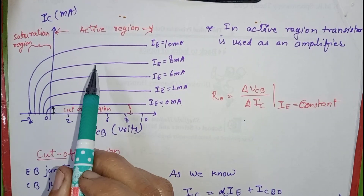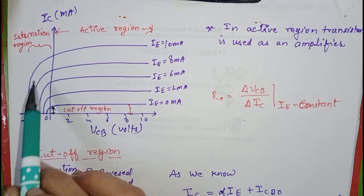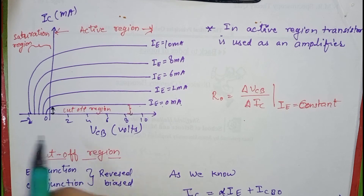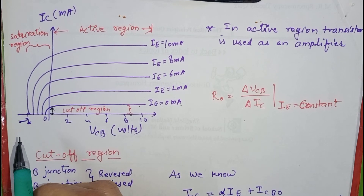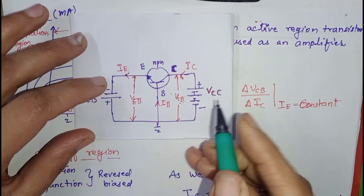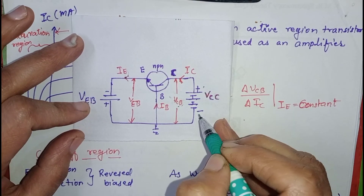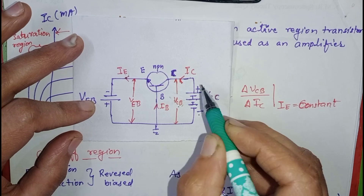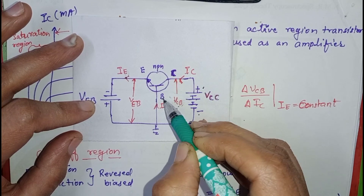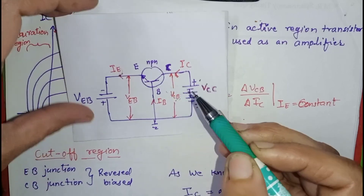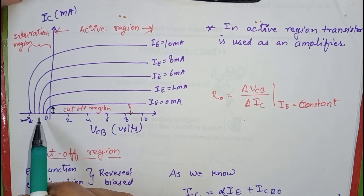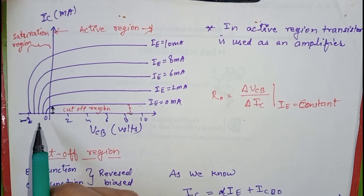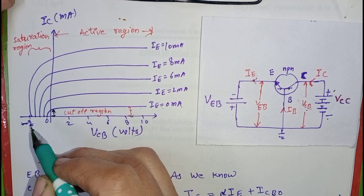This region towards the left of the active region is known as the saturation region. In this region, VCB is negative, meaning the collector terminal becomes negative with respect to the common terminal. When this terminal becomes negative, the collector and base junction will be forward biased. So in the saturation region, both the emitter base junction and the collector base junction are forward biased, and there is a sudden increase in the current.